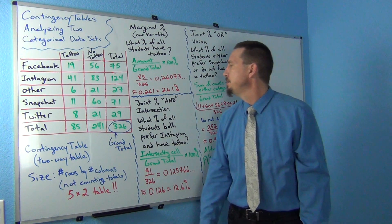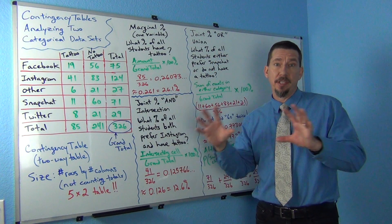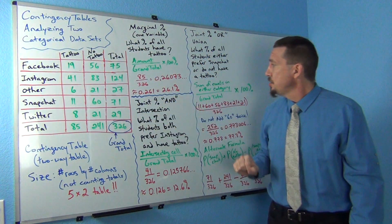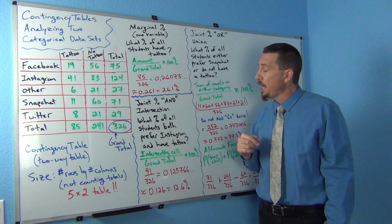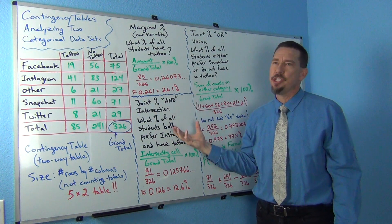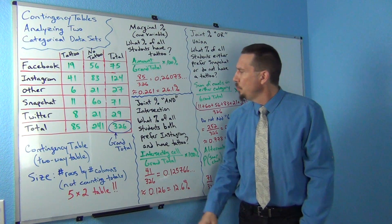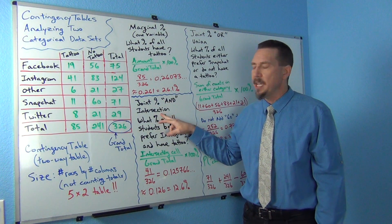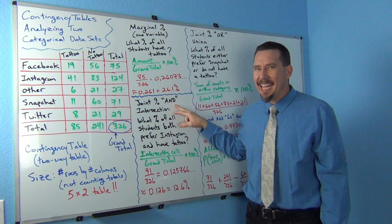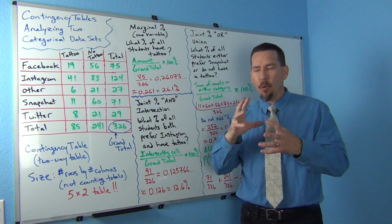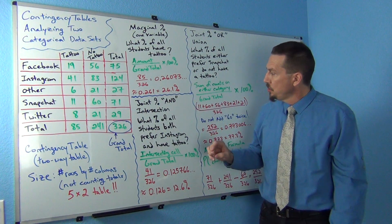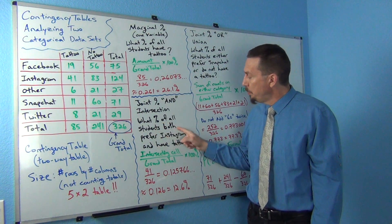Now let's get into percentages that involve both variables, because that's where the real analysis comes in. One type is called a joint probability, joint percentage, or joint proportion. The key word to look for is 'and' or 'both' — you want two things to be true about the same person. For example: 'What percentage of all the students both...'